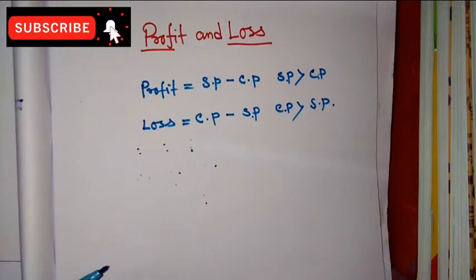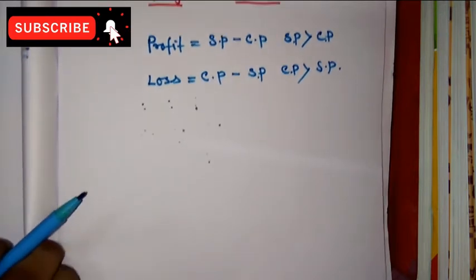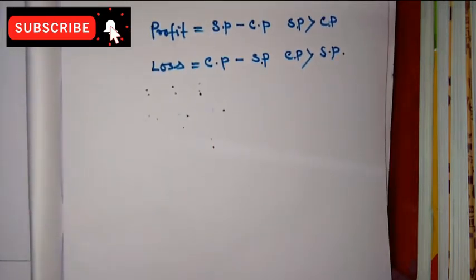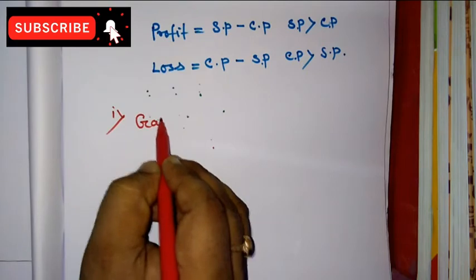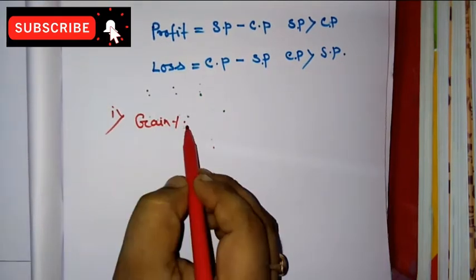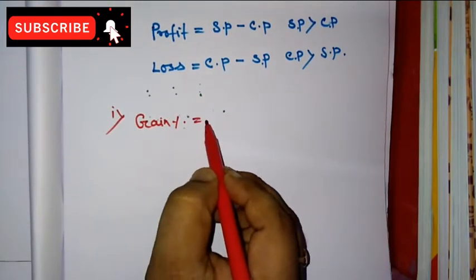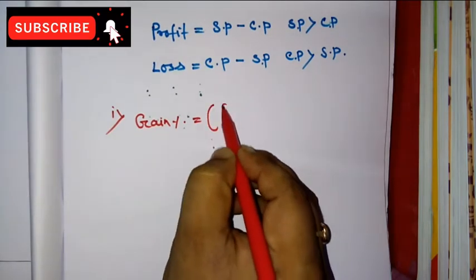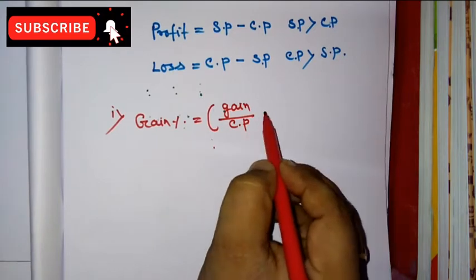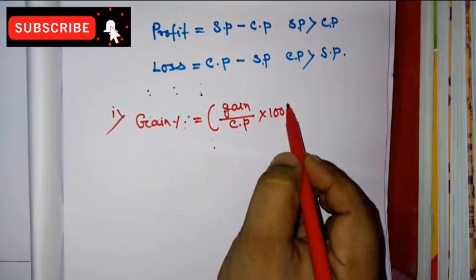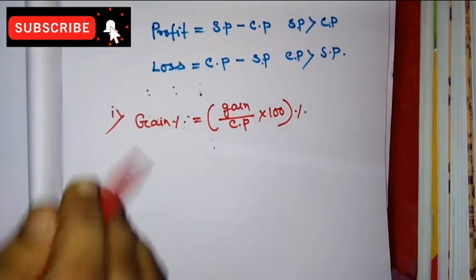Now we will learn about some relevant formulas regarding these chapters. Number one: gain percentage is equal to gain divided by CP into 100 percent.